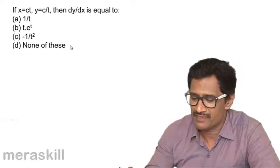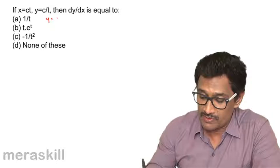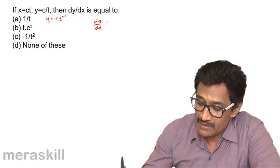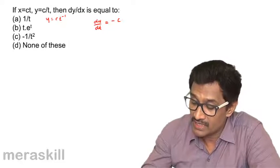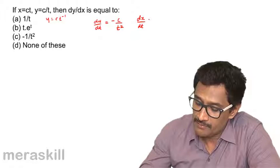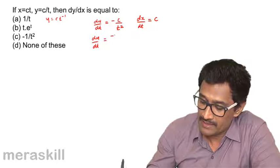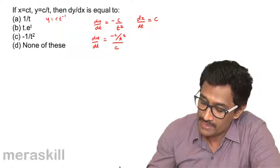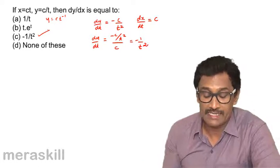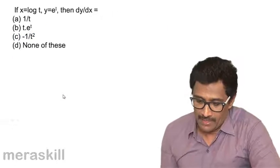Next, x = ct and y = c/t, which is the same as y = c·t⁻¹. So dy/dt = -c·t⁻², that is -c/t². And dx/dt = c. Therefore dy/dx = (-c/t²) / c = -1/t². So the correct option is -1/t².